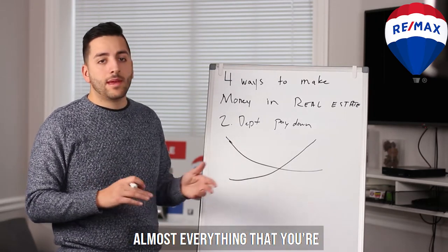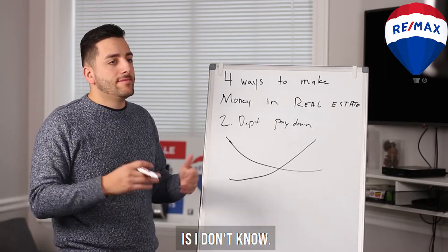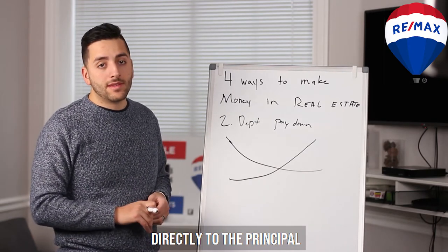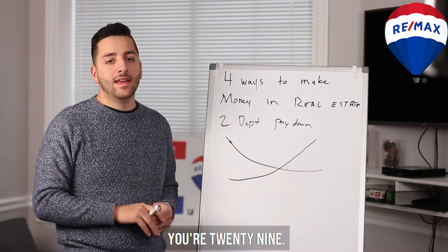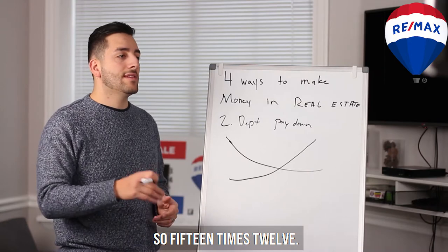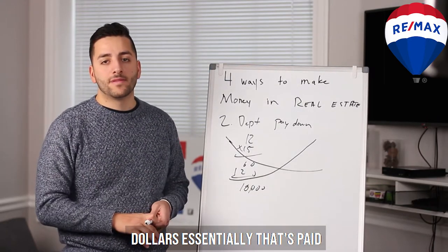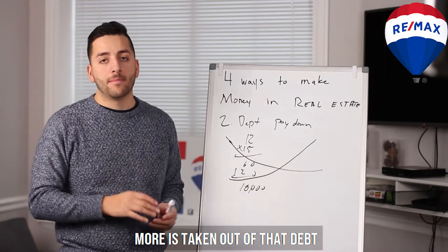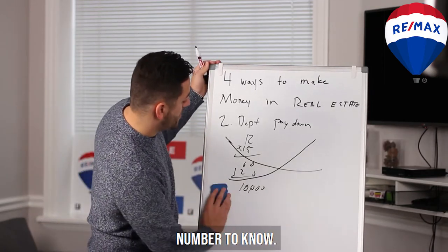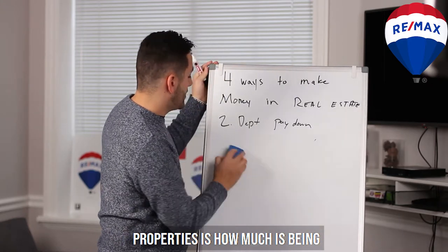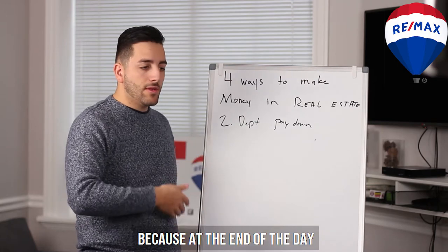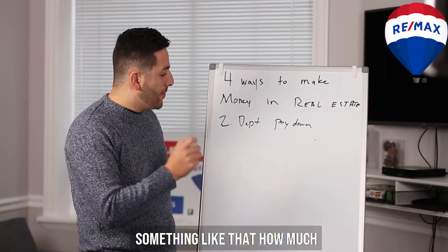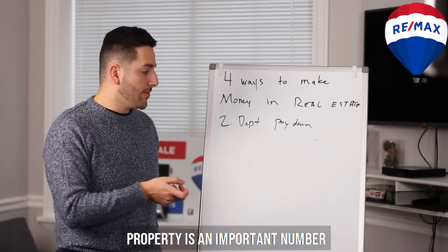The amortization schedule works like this: in the beginning, interest is very high and principal paydown is low. Over time those flip. By year 29 or 30 of a 30-year amortization, almost all of your payment — say $1,500 to $1,600 a month — goes directly to principal. That's roughly $18,000 per year in paydown near the end. So the longer you hold the home, the more debt pay down benefits you.